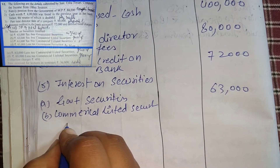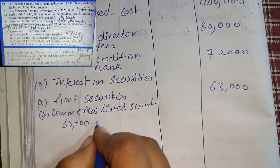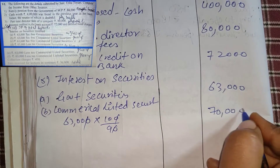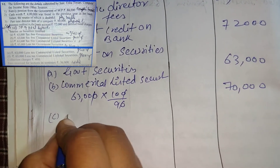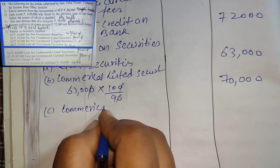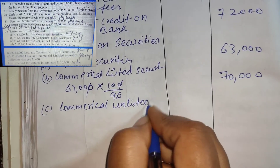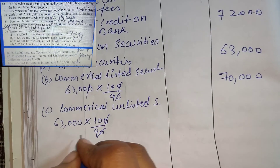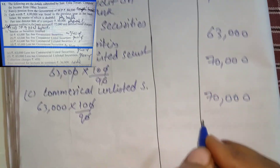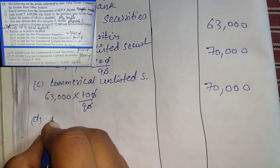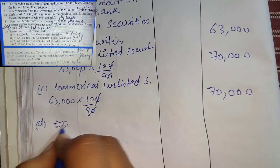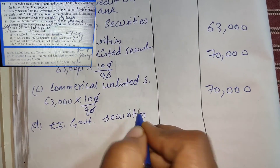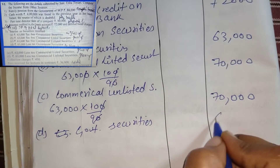For tax-free commercial listed securities: 63,000 × 100/90 = 70,000. We write 70,000. Next, 63,000 tax-free commercial unlisted securities — listed or unlisted (non-government) will be grossed up: 70,000. Next, 63,000 less-tax government securities — no gross-up for government securities, so we write 63,000.